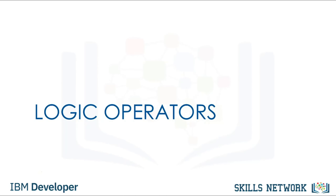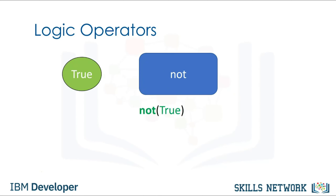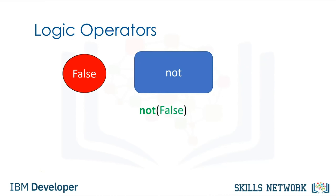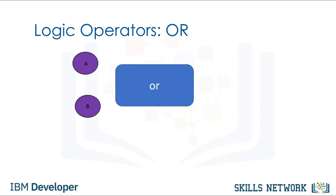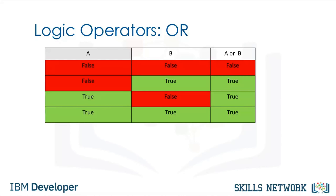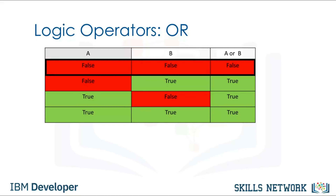Now let's take a look at logic operators. Logic operations take Boolean values and produce different Boolean values. The first operation is the NOT operator: if the input is true, the result is false; similarly, if the input is false, the result is true. The OR operator takes in two values and produces a new Boolean value. The OR operator only produces false if all the Boolean values are false.